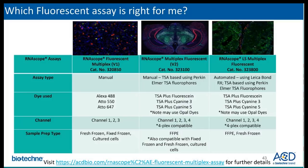Which fluorescence assay would be right for you? The first assay, fluorescence multiplex V1, is best used with fresh frozen samples and consists of labeled probes conjugated to fluorophores. This assay allows for three-plex capabilities to detect up to three mRNA markers simultaneously. The second assay, multiplex fluorescence V2, is a TSA-based assay utilizing Perkin Elmer TSA fluorophores or opal dye. It was developed with FFPE tissues in mind to help address the autofluorescence issue. This assay can also be followed with immunofluorescence, and with the additional purchase of a four-plex ancillary kit, allows for up to four-plex detection.